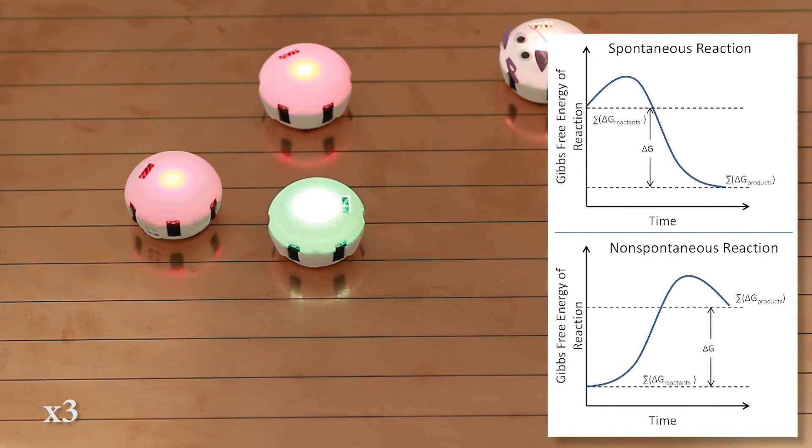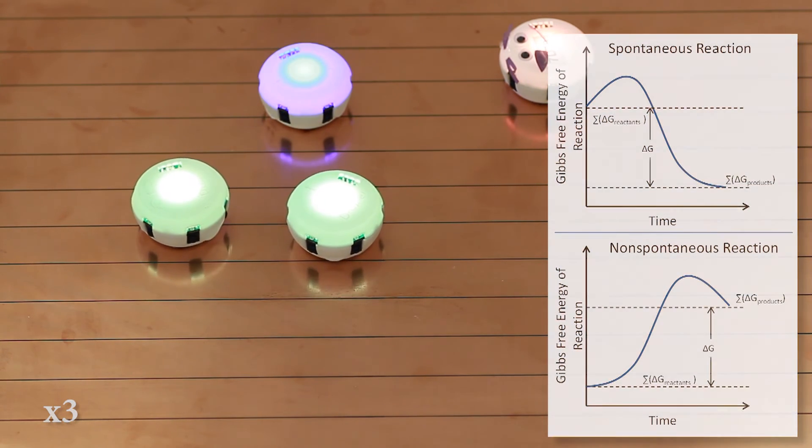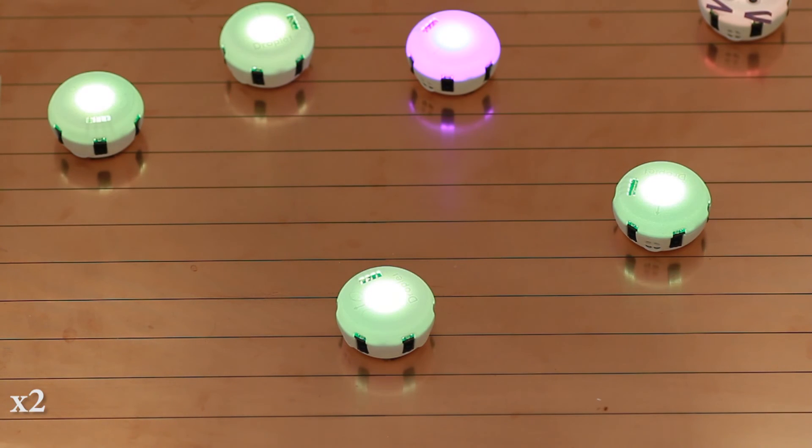Gibbs free energy is the variable that determines whether an intermolecular reaction happens spontaneously. We present an interactive and tangible tool which can introduce students to chemistry and robotics.